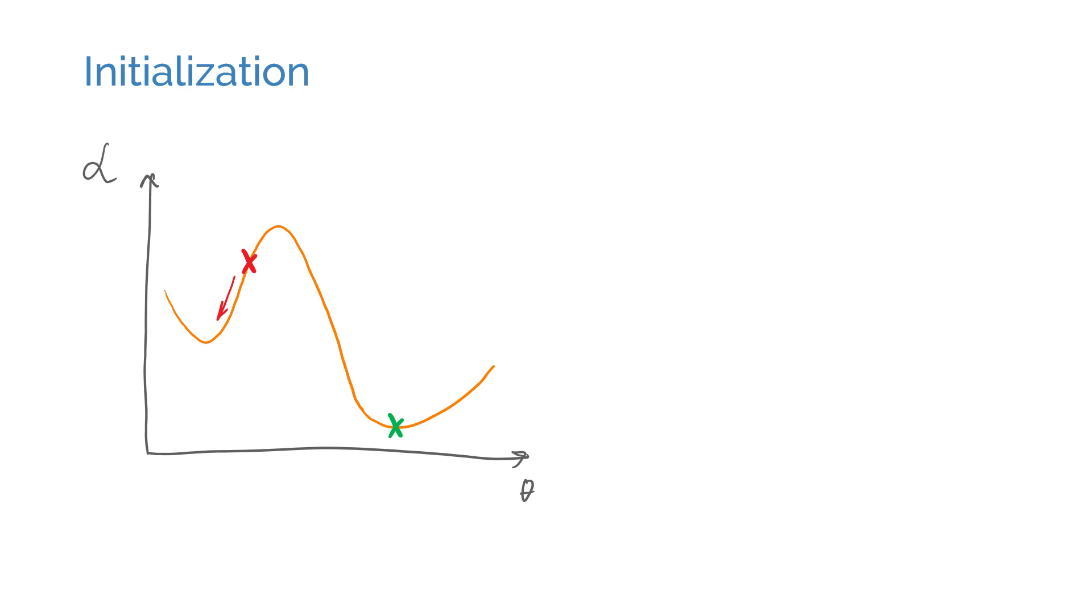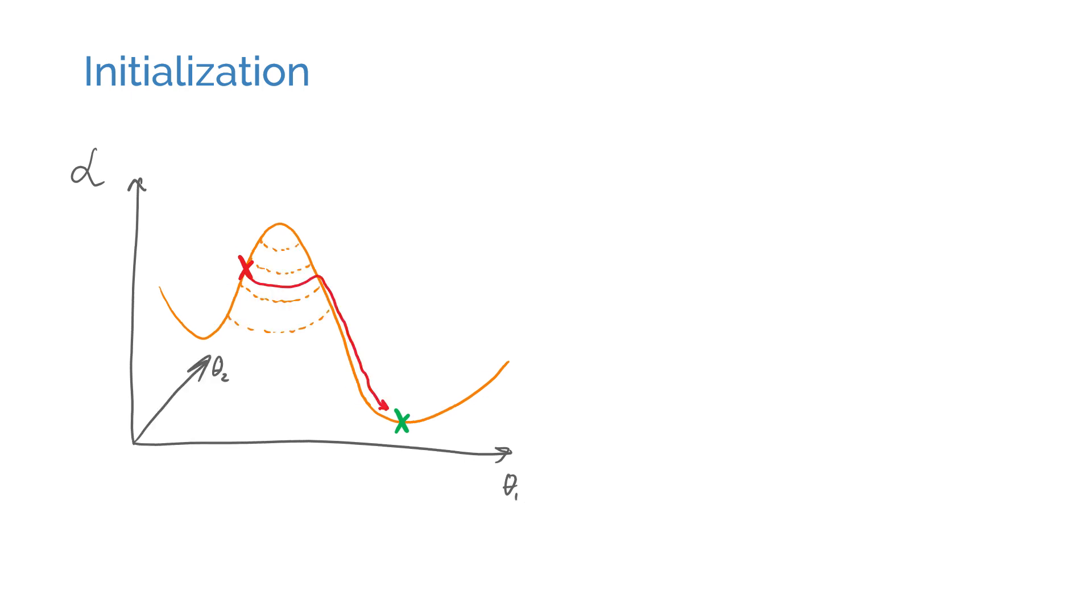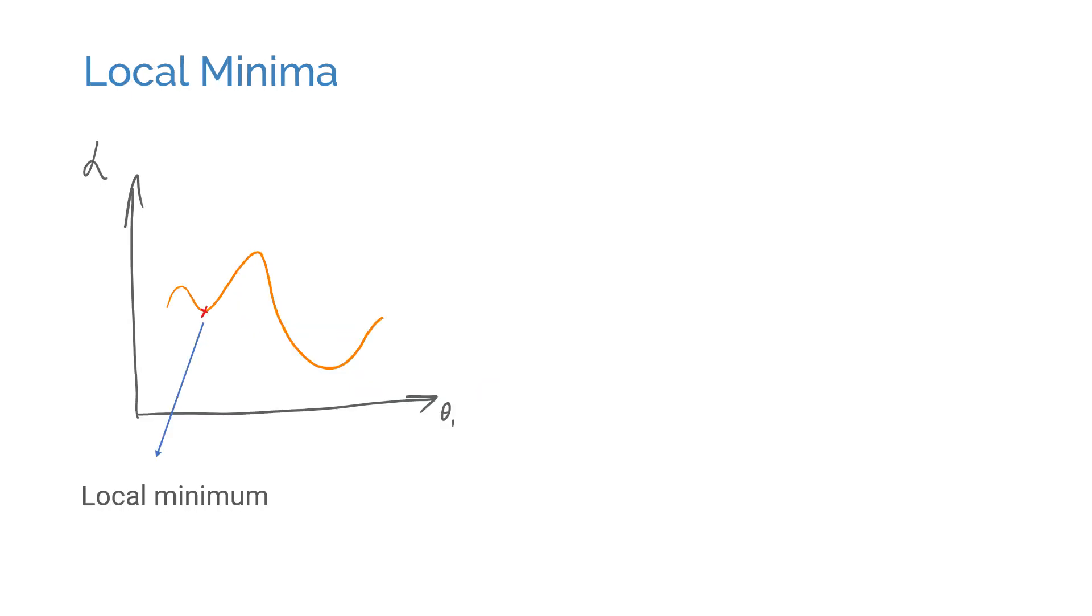In practice though, cost functions like these are very rare. In higher dimensional space, local minima are not very common and it's likely that there's a way around hills like these. Why are local minima rare? Think of it this way. For a point to be a local minimum, it needs to have a smaller value than its neighbors in all axes. If you have a single dimension, the odds of observing such structures is not very low.